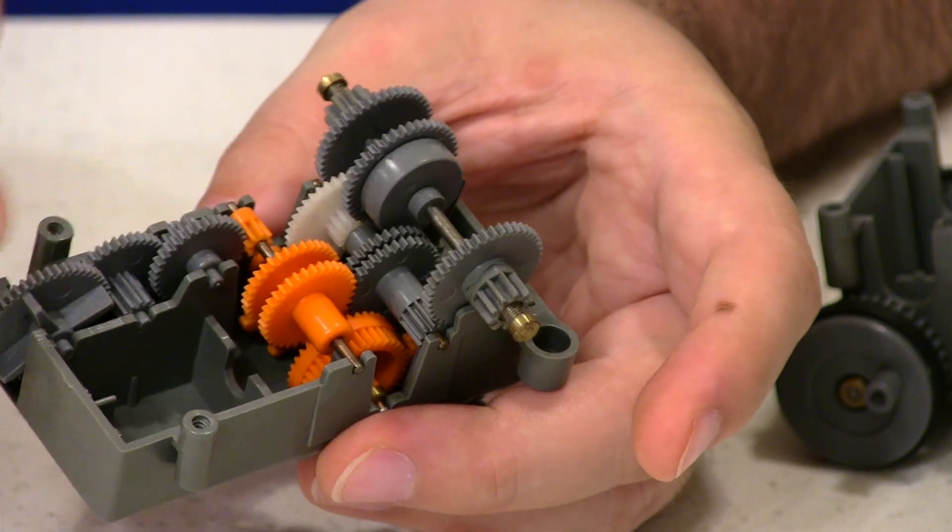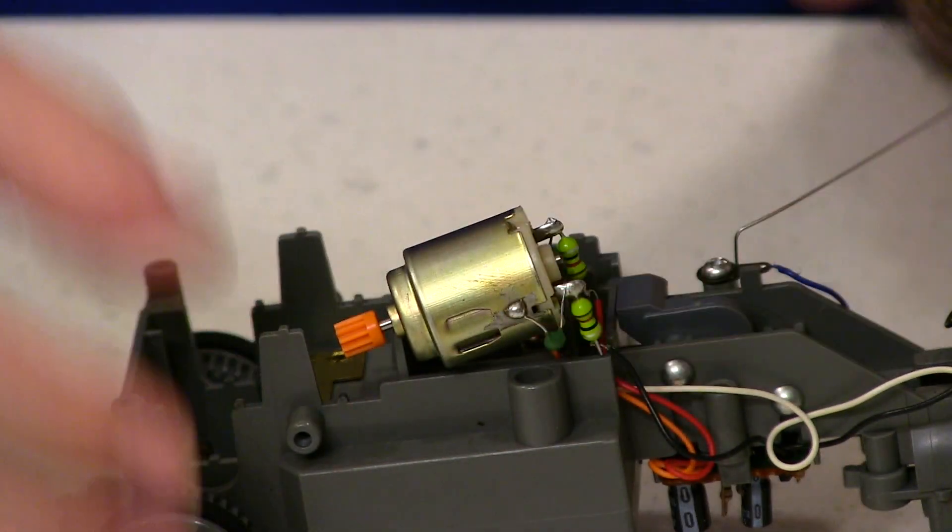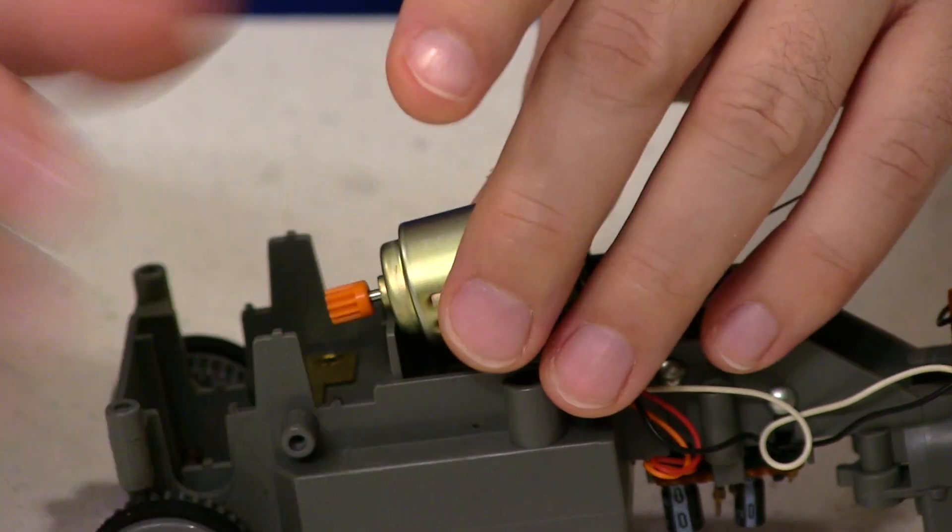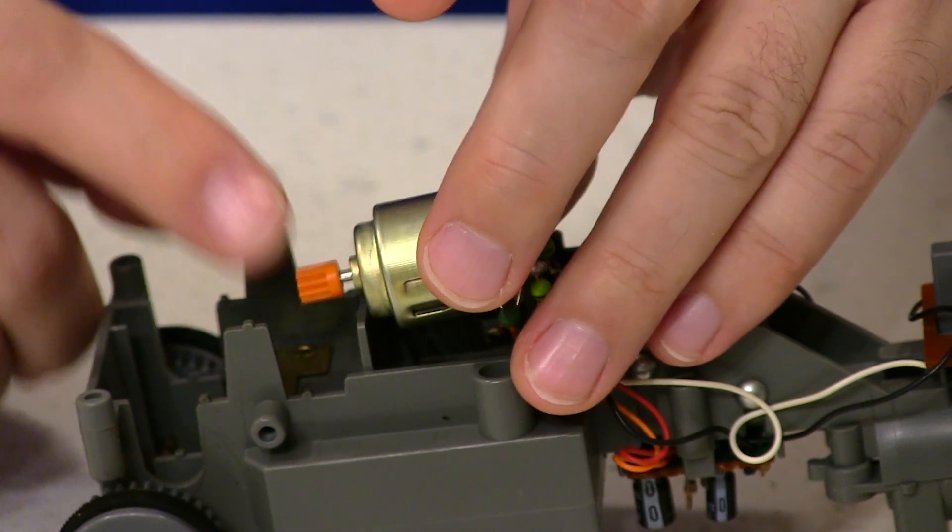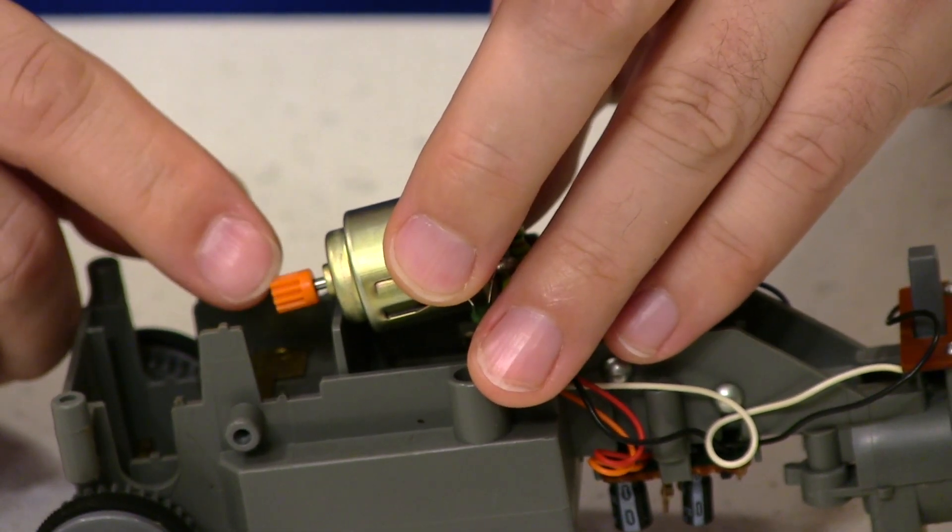So I'll just put a drop of oil on these axles in here and that should be fine. And the other problem that I found though, you won't be able to see this on camera, the motor, of course the main drive of the whole thing, this gear is actually cracked.